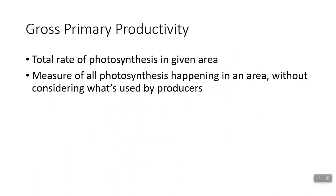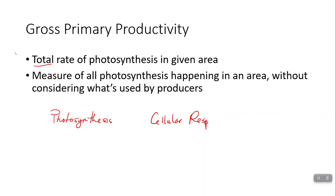We have two different measures of primary productivity: gross productivity and net productivity. Gross primary productivity is straight up how much photosynthesis is happening — not considering what's being used up by producers. We tend to think of producers as only doing photosynthesis, but they're living creatures that use up some energy. They produce glucose for themselves, and they're going to use some of it through cellular respiration. But for gross primary productivity, we're just looking at what's being produced by photosynthesis in total — all the energy being fixed by producers in a given area.